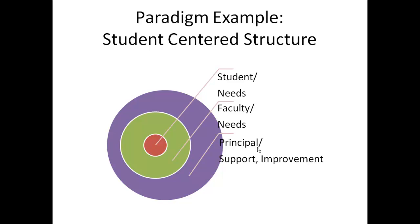The second ring of this structure is faculty, who are considered a stakeholder but are also supporting students. Faculty broker student needs, and faculty needs are also considered by the principal or administrative team. The outer ring of the structure is where lots of support, facilitation, and improvement work is fashioned. You can see that if you carry this paradigm in your head regarding the way that your building should be led, it's a very different experience in reality for the stakeholders in your building.